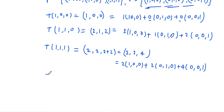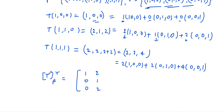The matrix representation of T with respect to β and γ is formed by taking the coordinate vectors as columns. The first column is (1, 0, 0), the second column is (2, 1, 2), and the third column is (2, 2, 4). So the matrix [T]_β^γ = [[1, 2, 2], [0, 1, 2], [0, 2, 4]]. Thank you.